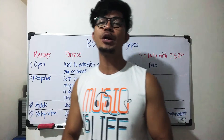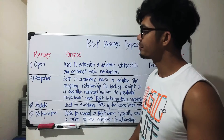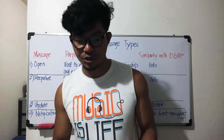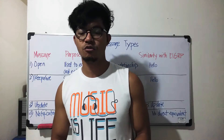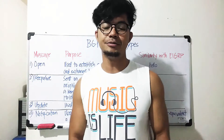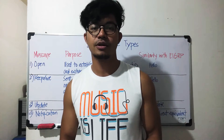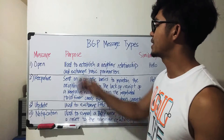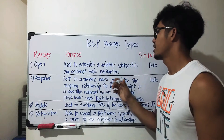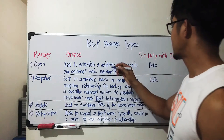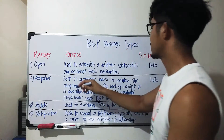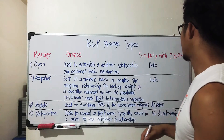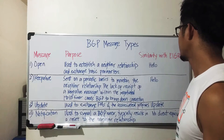In this video I'm going to talk about the four BGP message types. This is a table from a book called CCNP Routing and Switching Route 300-101 by Kevin Wallace — a really good book, you can Google it. The table has three columns: message, purpose, and similarity with EIGRP.